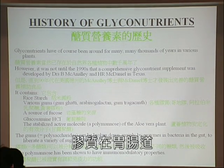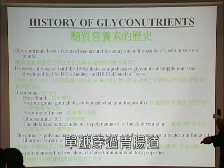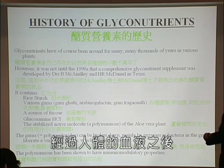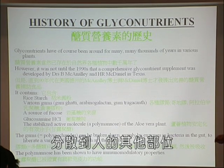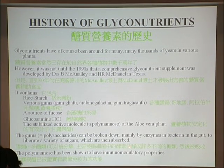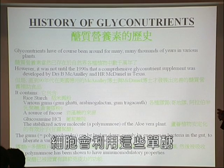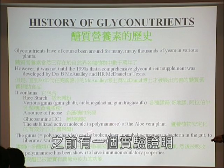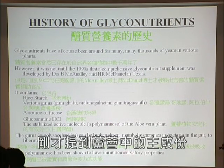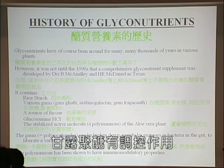When the gums are broken down to simple sugars, they are absorbed across the cells of the intestine, get into the bloodstream, and travel to all the different organs of the body — the brain, the liver, kidney, muscle, etc. Once they reach the cells, they are taken in and built up into sugar chains of glycoproteins and other molecules. The polymannose has been shown in a number of studies to affect the activity of the immune system — we call that immunomodulatory.